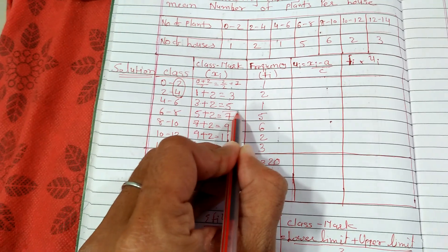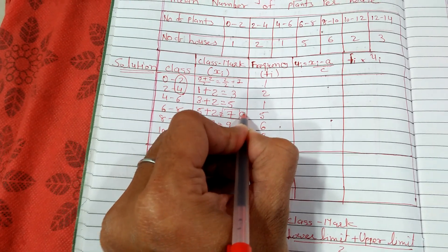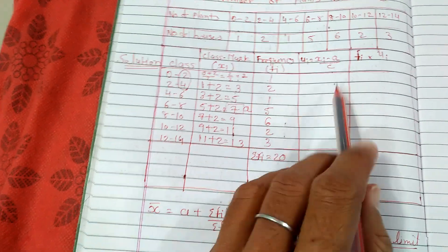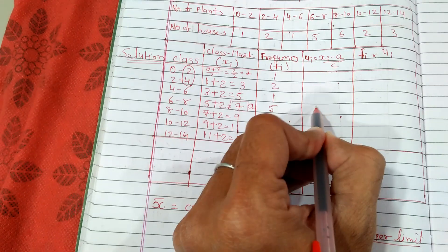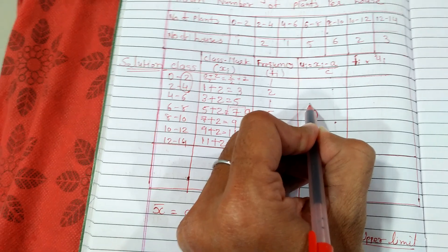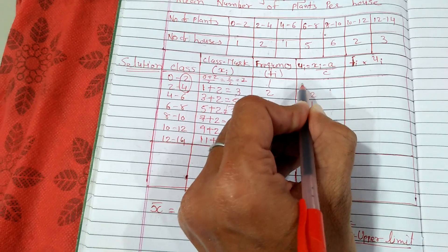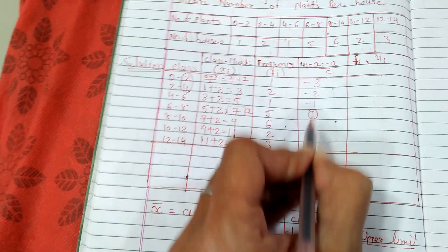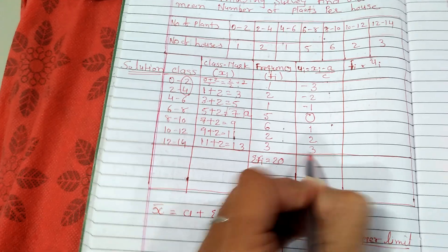This 7 we will take as a, so value of ui for this a will be zero. Above zero, value of ui will be minus 1, minus 2, and minus 3. Below zero it will be 1, 2, and 3.